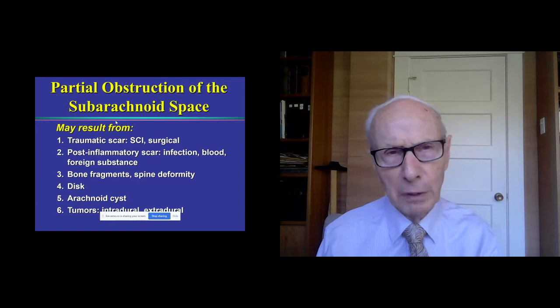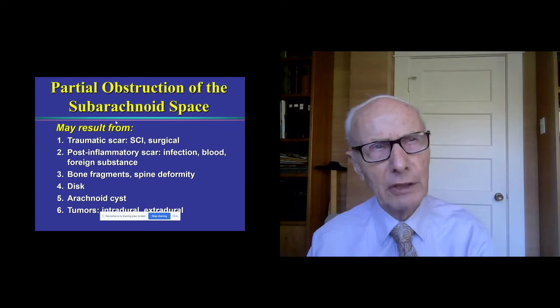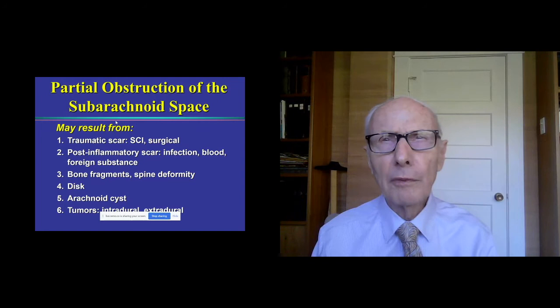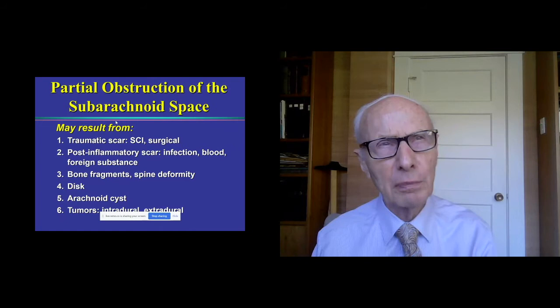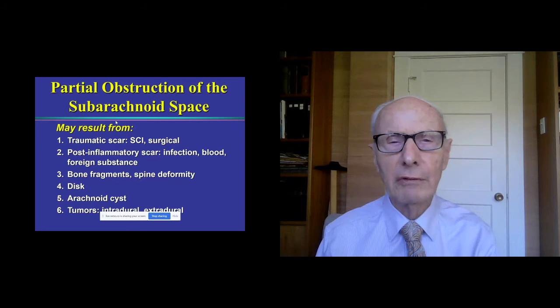Arachnoid cysts are developmental abnormalities in the form of a folding of the arachnoid, which is one of the membranes over the surface of the spinal cord. This fold can produce a pocket that prevents the normal flow of spinal fluid and can then result in syrinx formation. Rarely, tumors can also produce this.